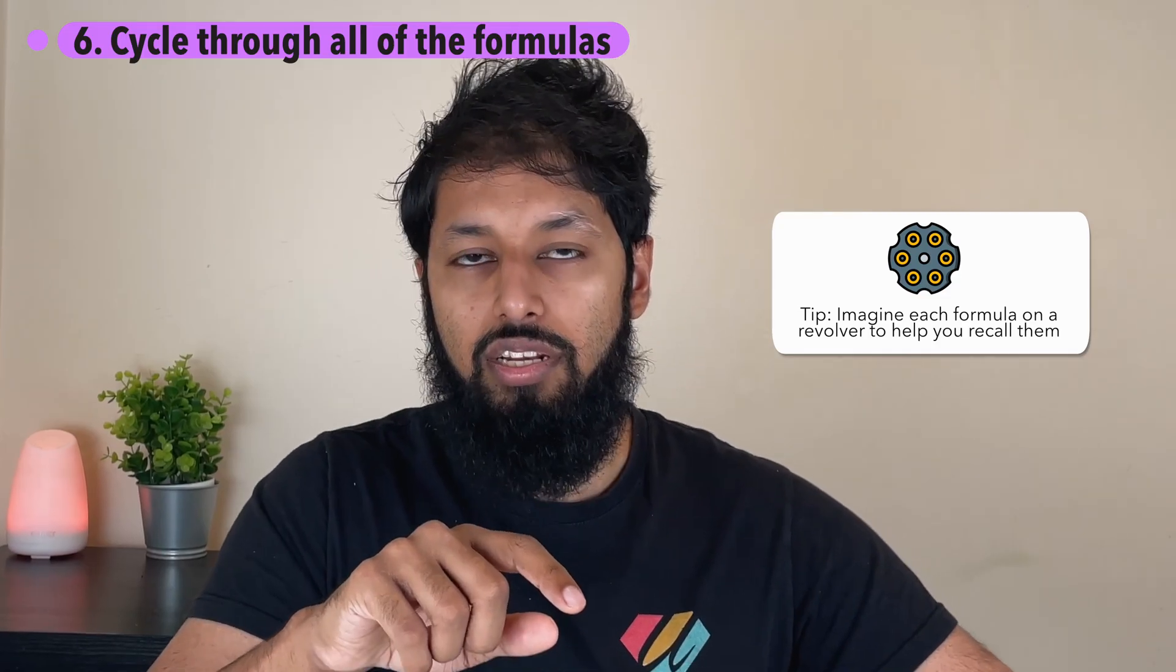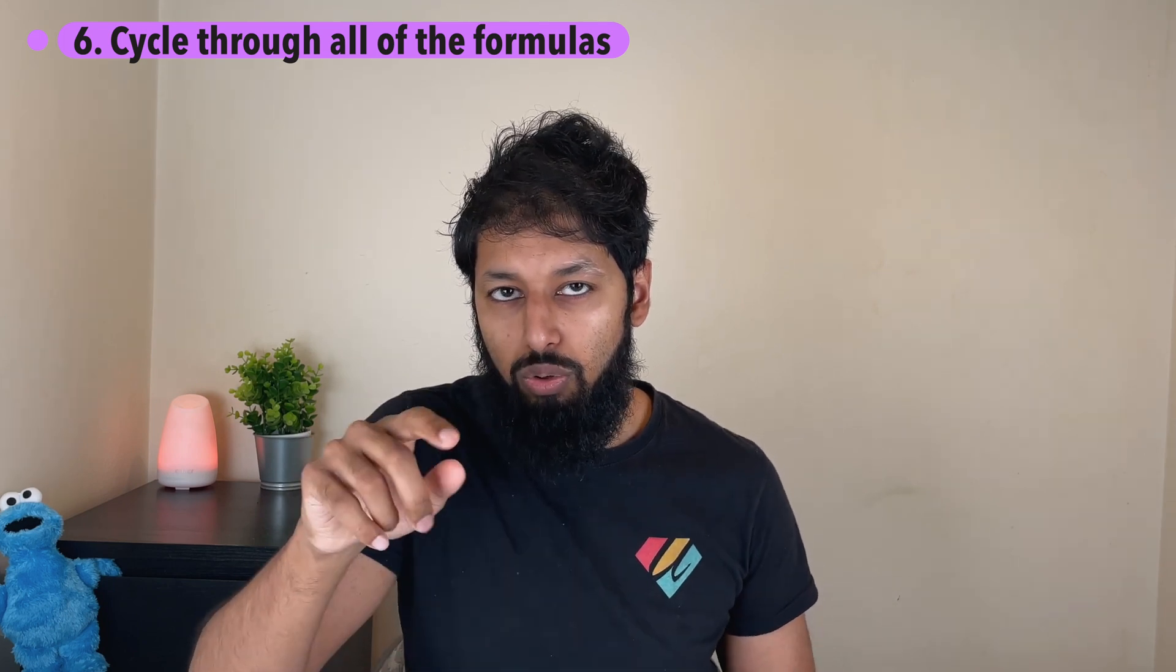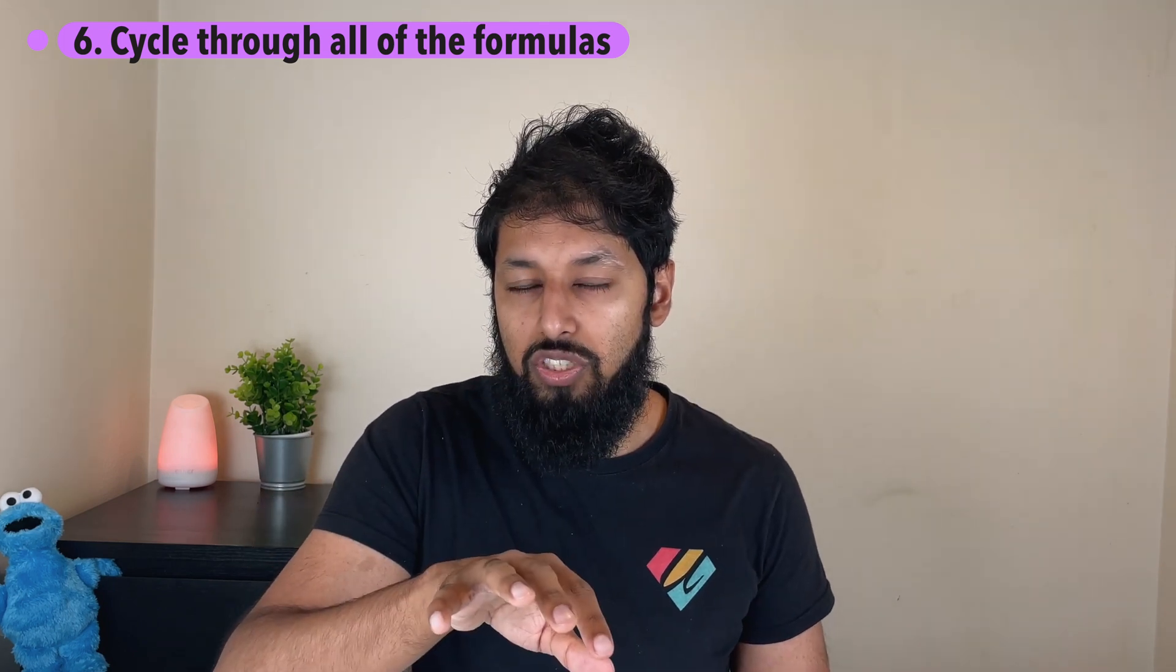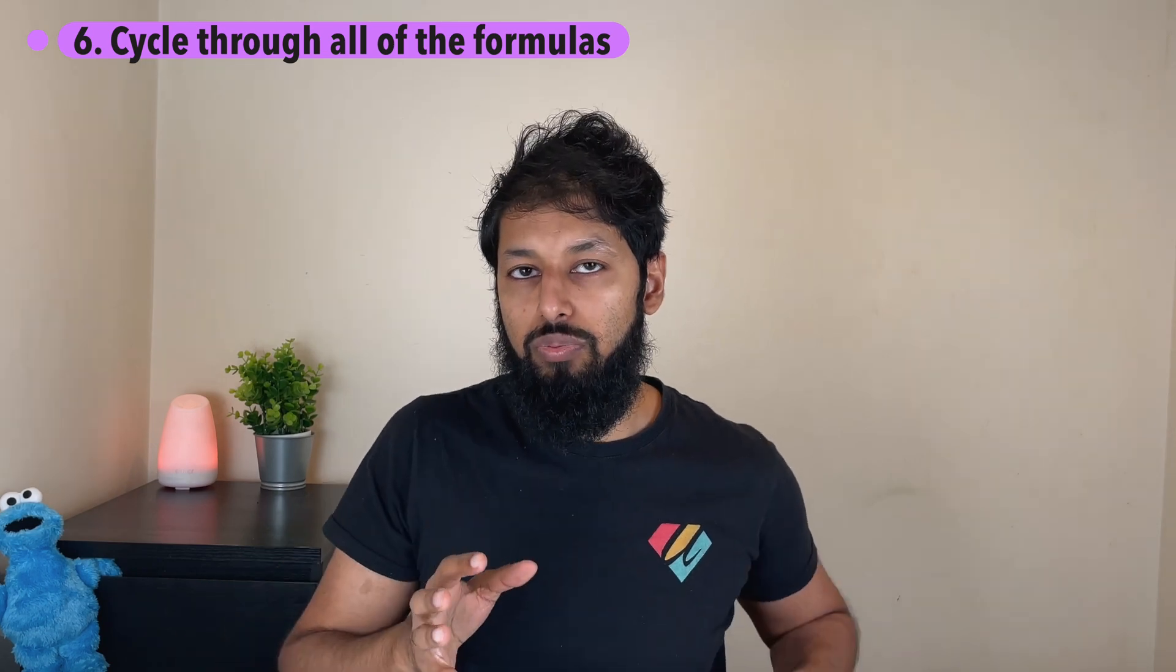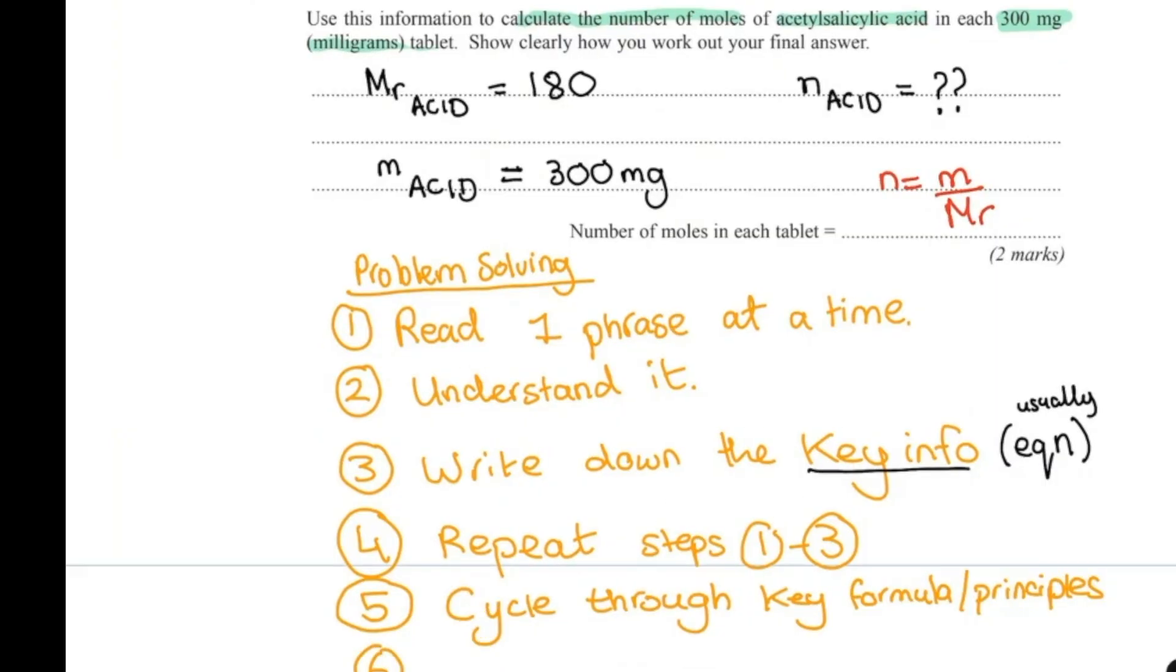And you go from there. Sometimes you might need multiple formulas, but you write down all the formulas that the information you just jotted down could be related to. Now that you've written down all the information, what you need to do is say, okay, what science do I know? What formula or what rule do I know that applies to this? Moles equals mass over Mr. Number seven: answer the question, solve the question.